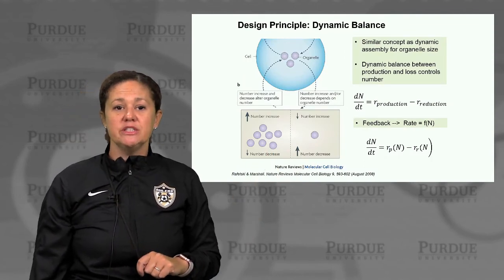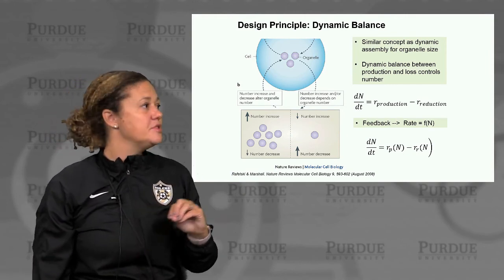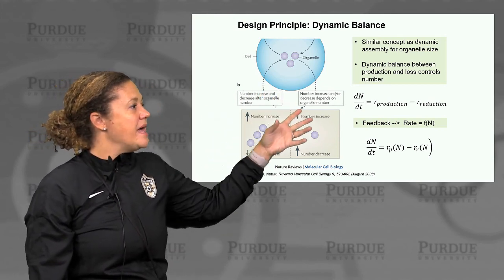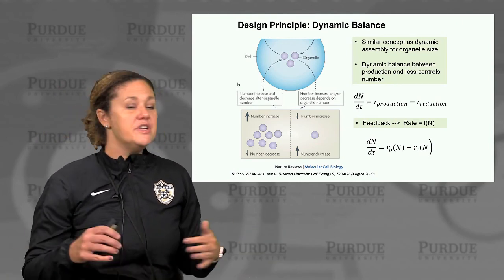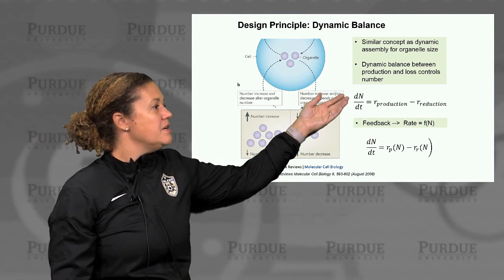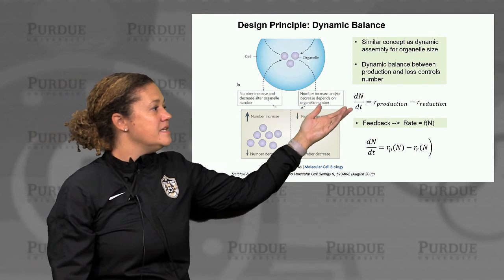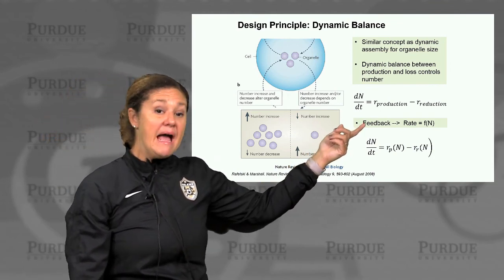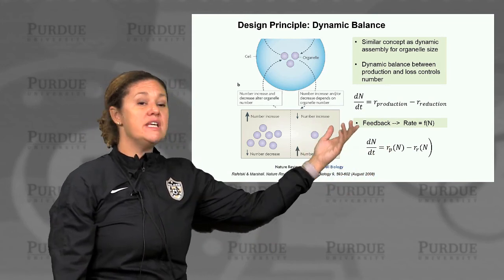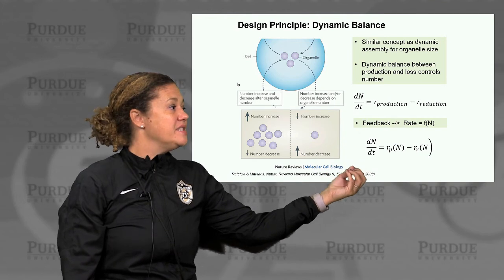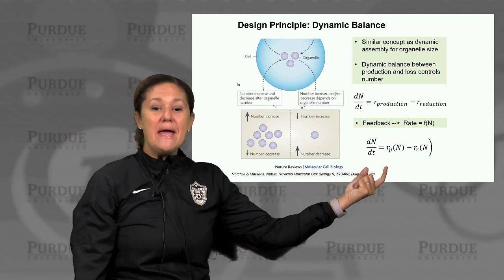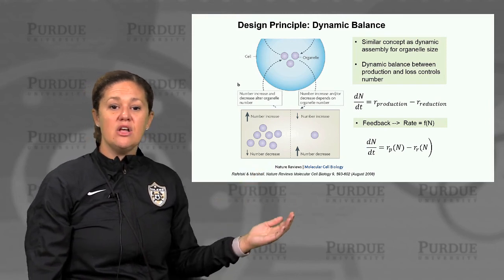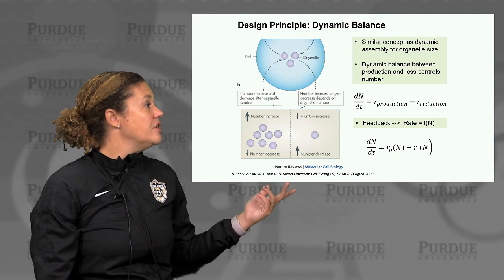The first design principle we're going to look at is dynamic balance, a very similar concept to the dynamic assembly we looked at for regulation of organelle size. In this dynamic balance, we have a balance between the rate of production and the rate of loss of organelle number. Looking at a simple ODE rate equation, dn/dt equals the rate of production minus the rate of reduction. Quite often there's feedback where one of these rates is controlled by the number present, allowing the cell to settle on a characteristic steady-state level of organelle number.